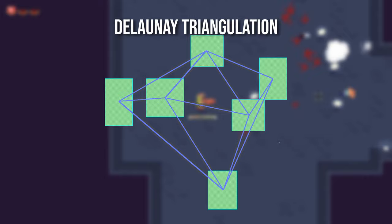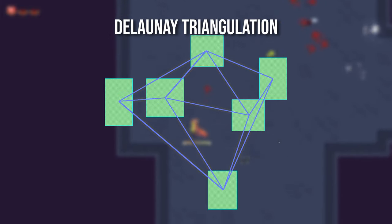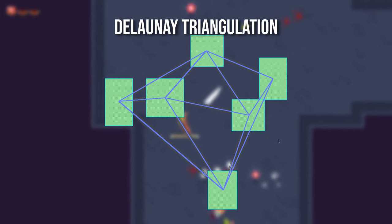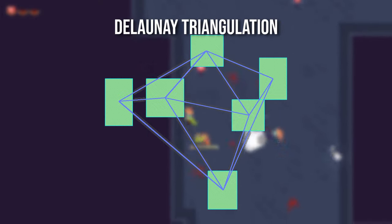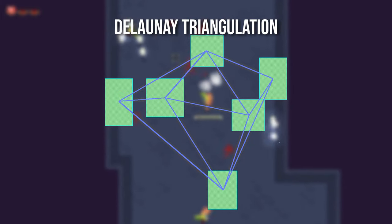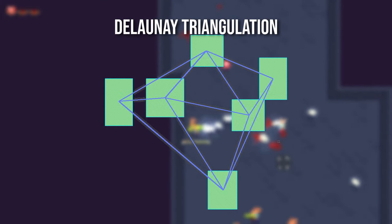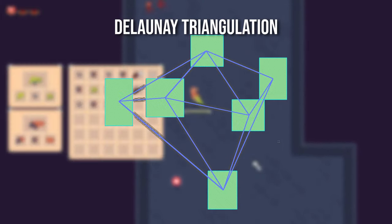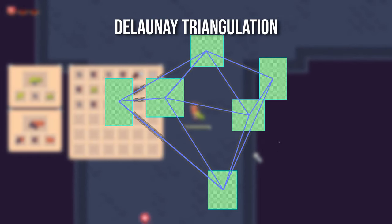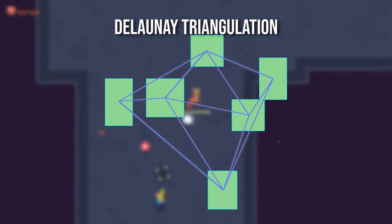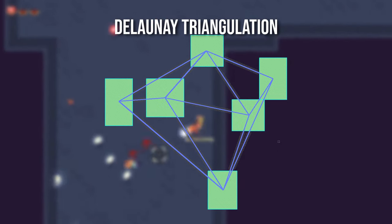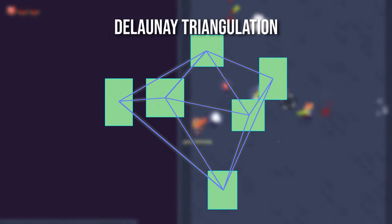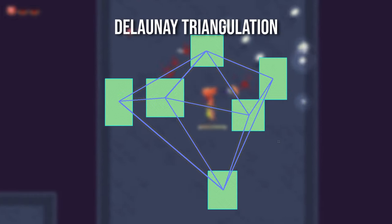Basically, what the Delaunay triangulation will do is create a graph such that each vertex is connected to each other vertex, either directly or indirectly, and ensure that none of the graph edges intersect each other. This is important because later we'll need to use the edge data to generate hallways, and we don't want our hallways to be a spaghetti mess.